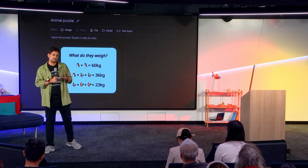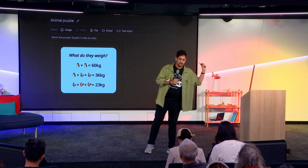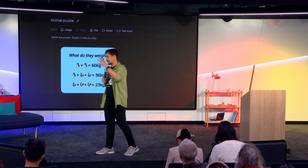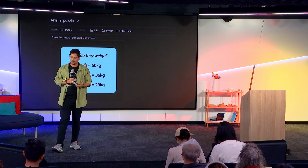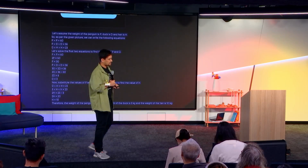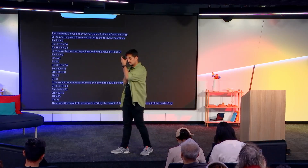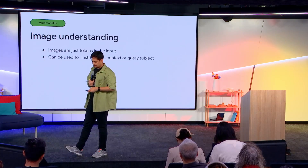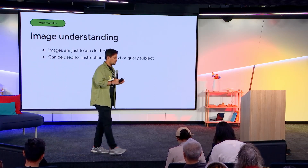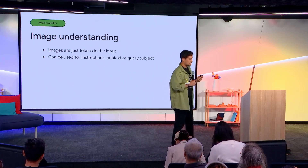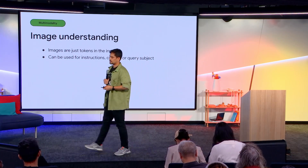It's not just about descriptive images — Gemini also understands rasterized text inside an image. This is an image where the text is actually pixel-rasterized, not vector. The question also says 'explain it step by step,' so Gemini goes ahead and explains everything in a step-by-step manner. It does a solution for a three-variable linear equation easily. Images are just another token for Gemini's input — they can be a question in themselves, another context for your prompt, or a query subject.